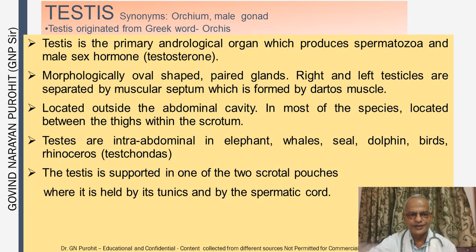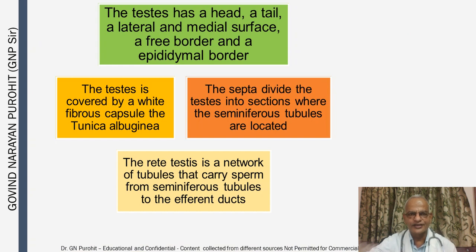The testes are located outside the abdominal cavity in most species, positioned between the thighs within the scrotum. They are intra-abdominal in elephant, whales, seal, dolphin, birds, and rhinoceros, which are known as testicondas. Each testis is supported within a scrotal pouch, held by tunics and the spermatic cord. The testis has a head, tail, lateral and medial surface, a free border, and the epididymal border, and is covered by the white fibrous capsule called the tunica albuginea.